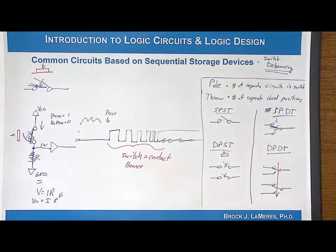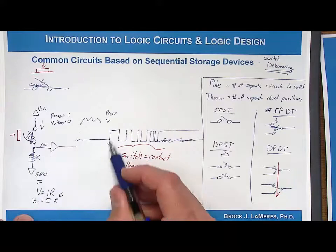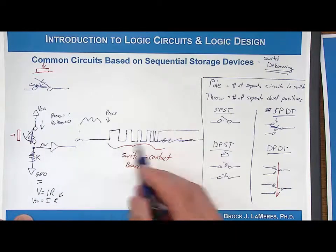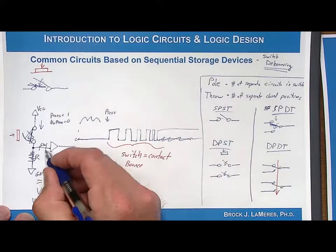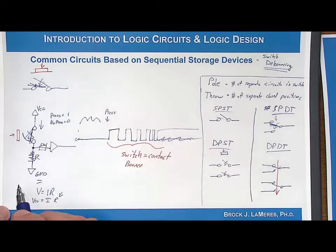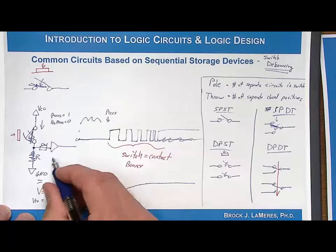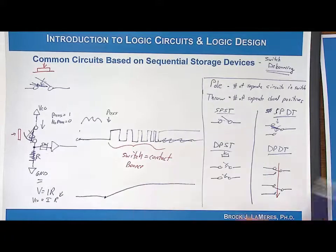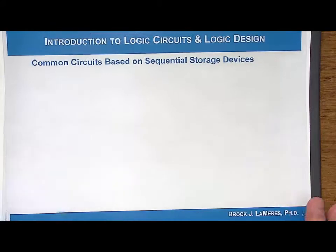The single pole single throw situation can't be solved with a sequential logic storage device, because you're driving to VCC and driving to ground. The only way to really solve it is to put a circuit in to dampen the bounces - something like a resistor-capacitor circuit with hysteresis. But those don't involve sequential logic storage devices. Let's look at the switch the sequential logic storage device helps with: the single pole double throw.